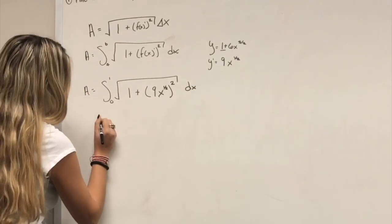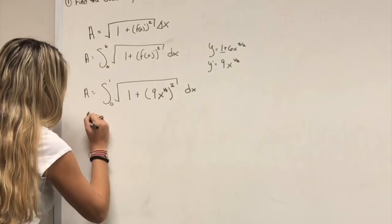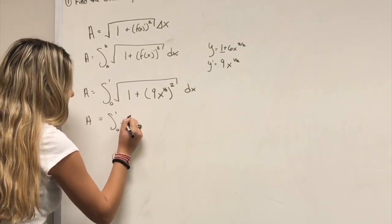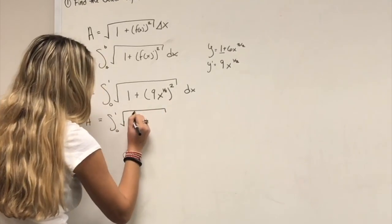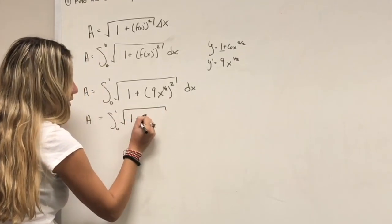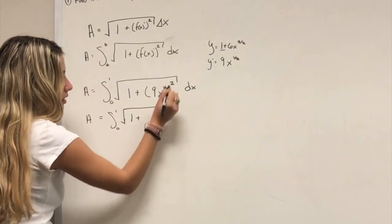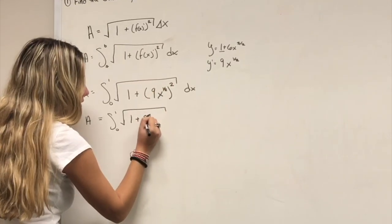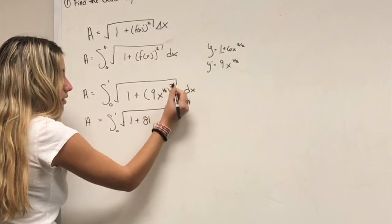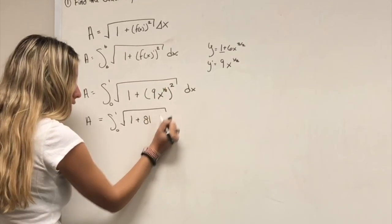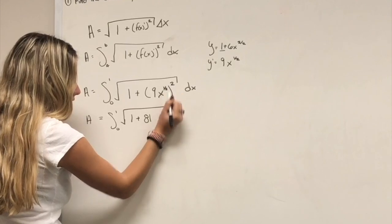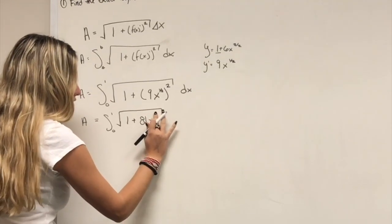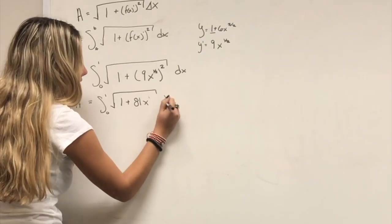Now simplify: (9x^(1/2))² = 81x, so the integrand becomes the square root of 1 plus 81x dx.